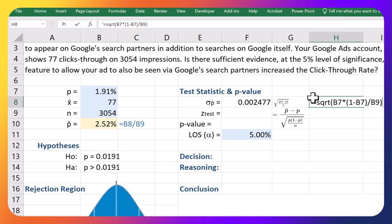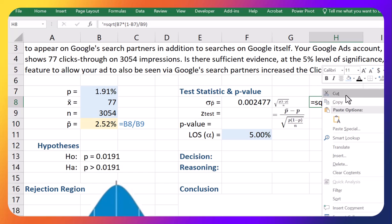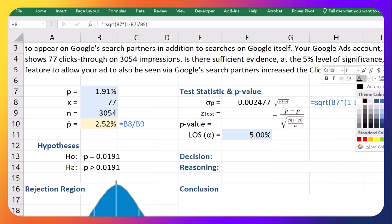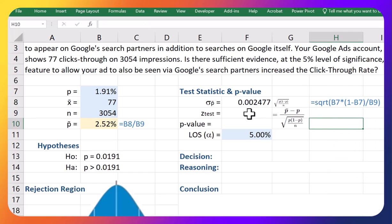Just going to comment it out and put that formula here. Okay and so now I can go get my z-test by taking my p-bar, the 2.52 percent, minus p which is the 1.91 percent, and divide, so take that minus that, divide by this piece which is this guy here. And that gives me 2.4680.